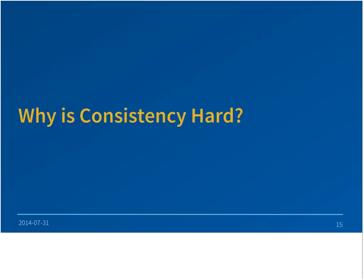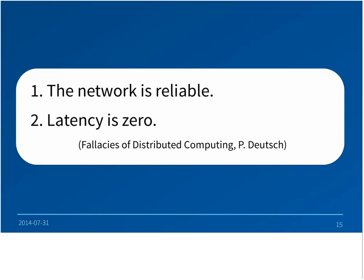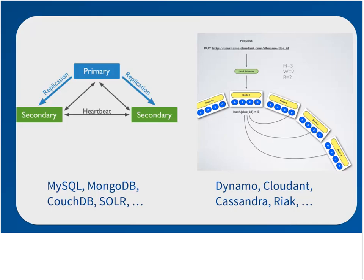Consistency is hard, and I want to make sure everybody understands why, because there are quite a few claims floating around now in the database marketplace. Peter Deutsch has eight fallacies of distributed computing, but you can really stop at the first two: the network is reliable, and latency is zero. Anybody who builds systems on the Internet knows that. I want to focus down on two specific types of distributed systems and what the failure modes are in even the simplest cases.